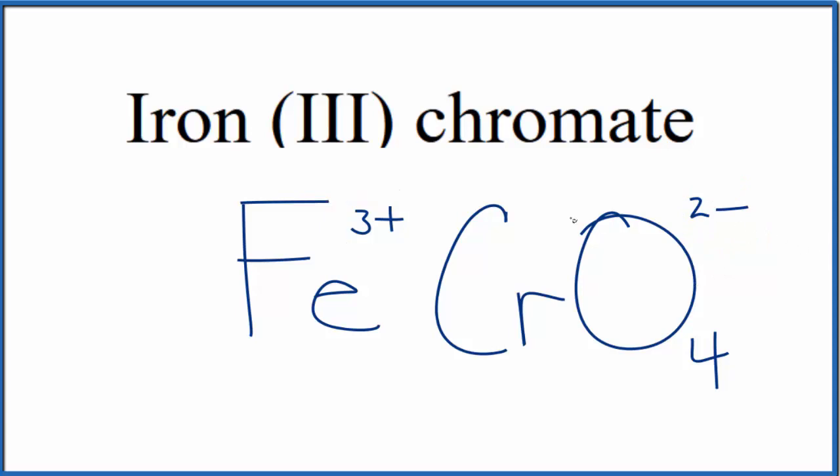We can use something called the crisscross method to make that happen. We can move the 2 down here, the 3 over here, get rid of these symbols, and then because we have three of these chromate ions, we do need to put parentheses around the chromate ion.